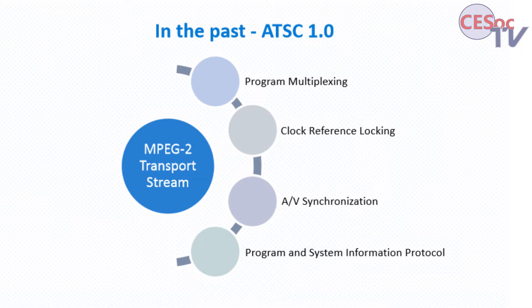Looking back at history, ATSC 1.0 when we went digital was all based on the MPEG-2 transport stream. Very successful technology — did what it needed to do very well, very flexible. It gave capabilities for program multiplexing, being able to mix different programs in a single transmission, match up clocks — essentially match the encoder clock to a decoder clock so things could be presented at the right time. This is a key to audio-video synchronization. And there was metadata that made it usable, with program guides and the like.